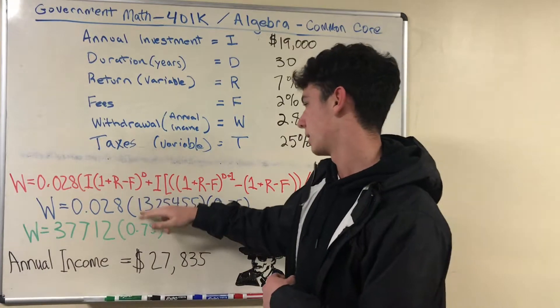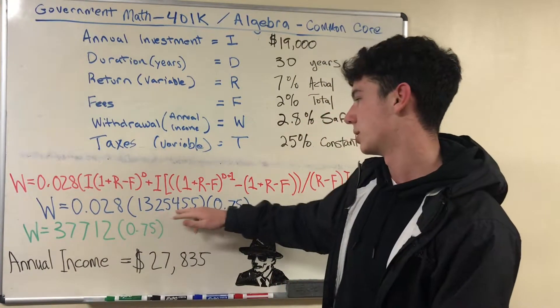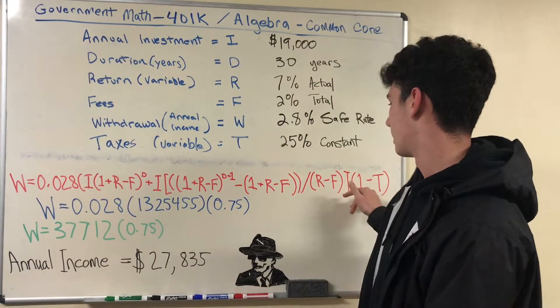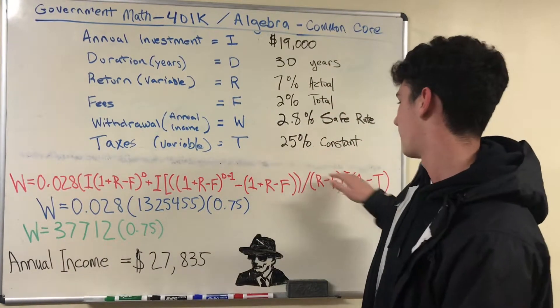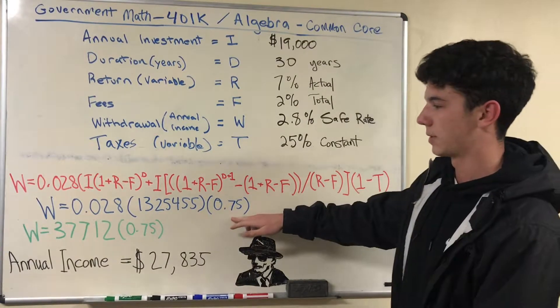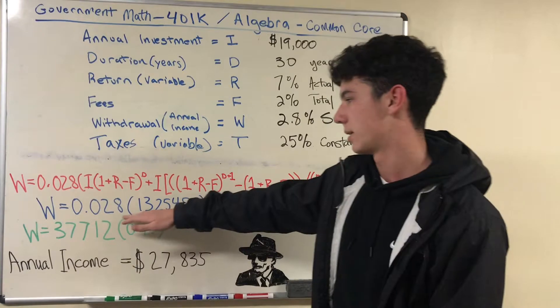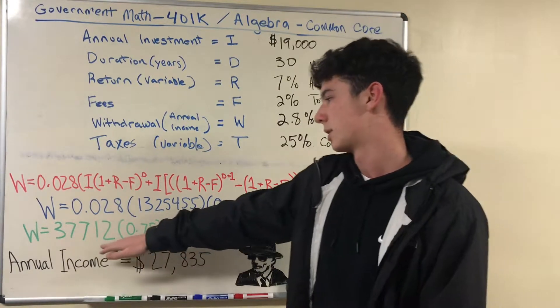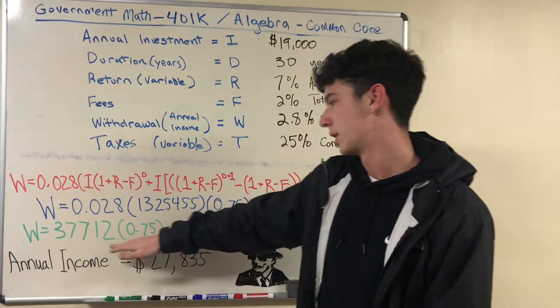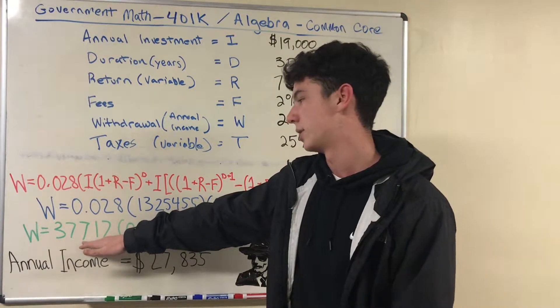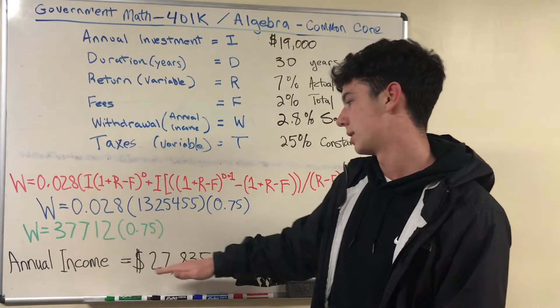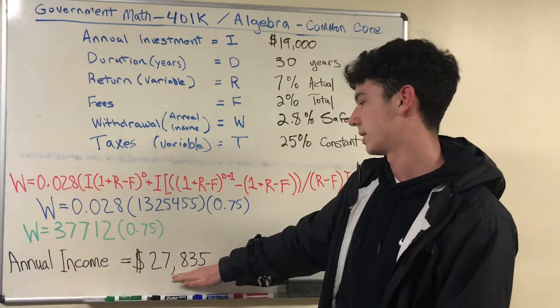You multiply that by the 2.8 percent and then if you use taxes at 25 percent you subtract it from one and you'll get 75 percent. You multiply that by this number as well. So once you multiply the 2.8 percent by this number you'll get $37,712. Multiply that by 75 percent and you'll get $27,835.